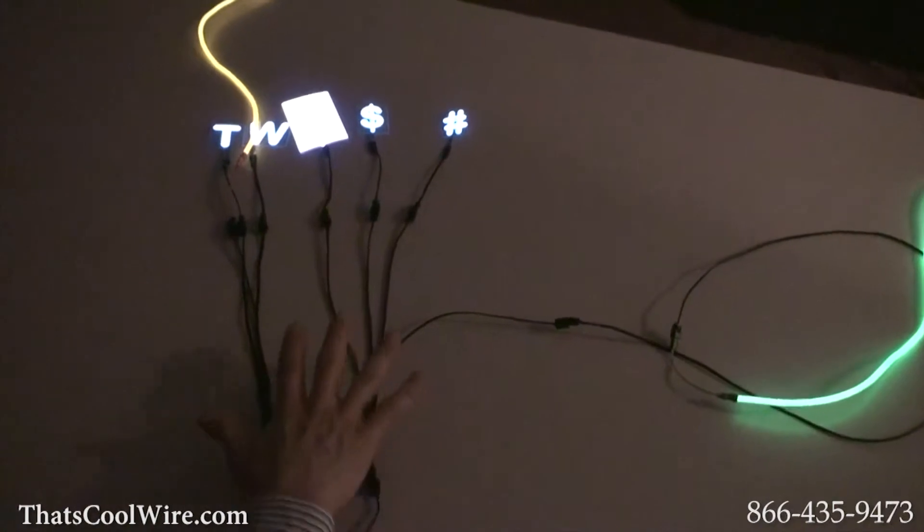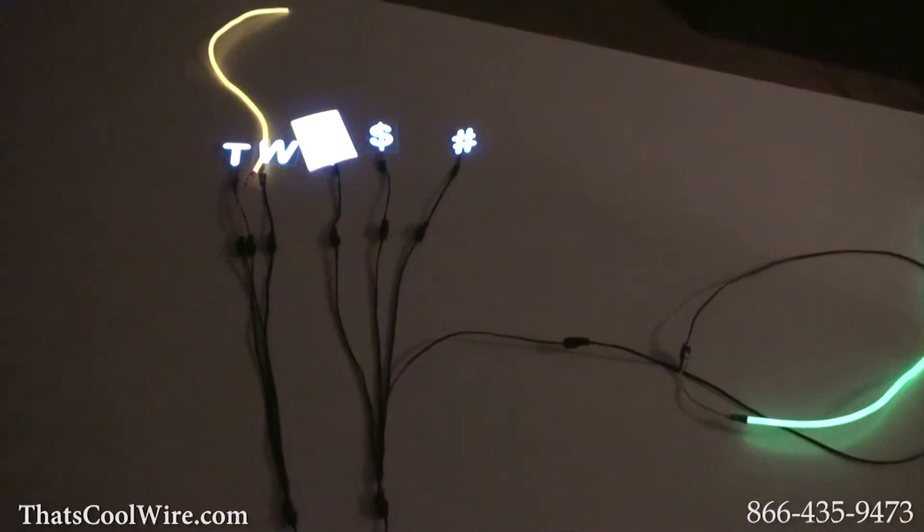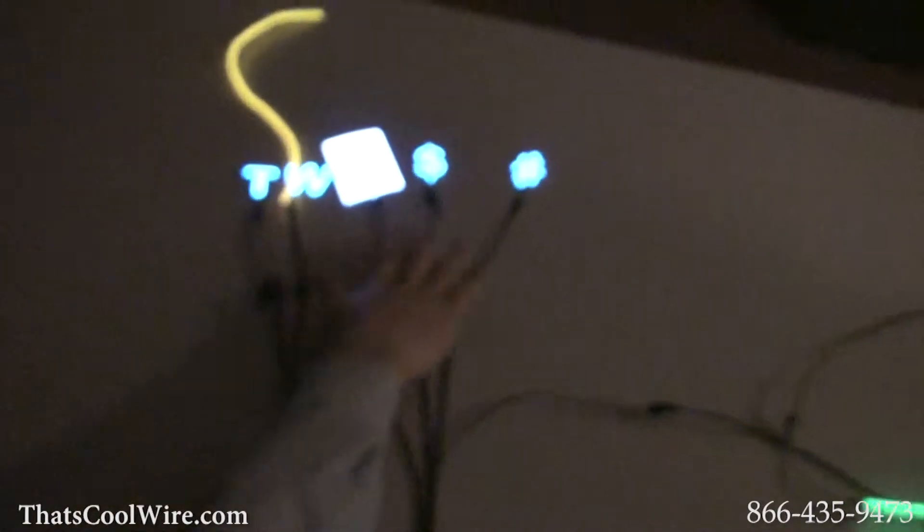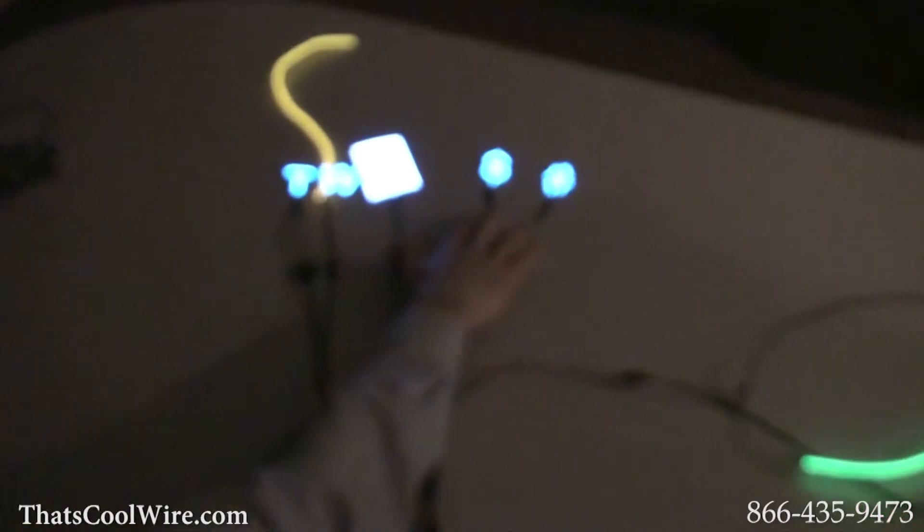Whatever you do with what we're showing you right here, whatever the inverter is doing, it'll go to every letter. So you cannot make these two letters blink unless they're on a separate inverter. So whatever is on this inverter, everything will react the same way.